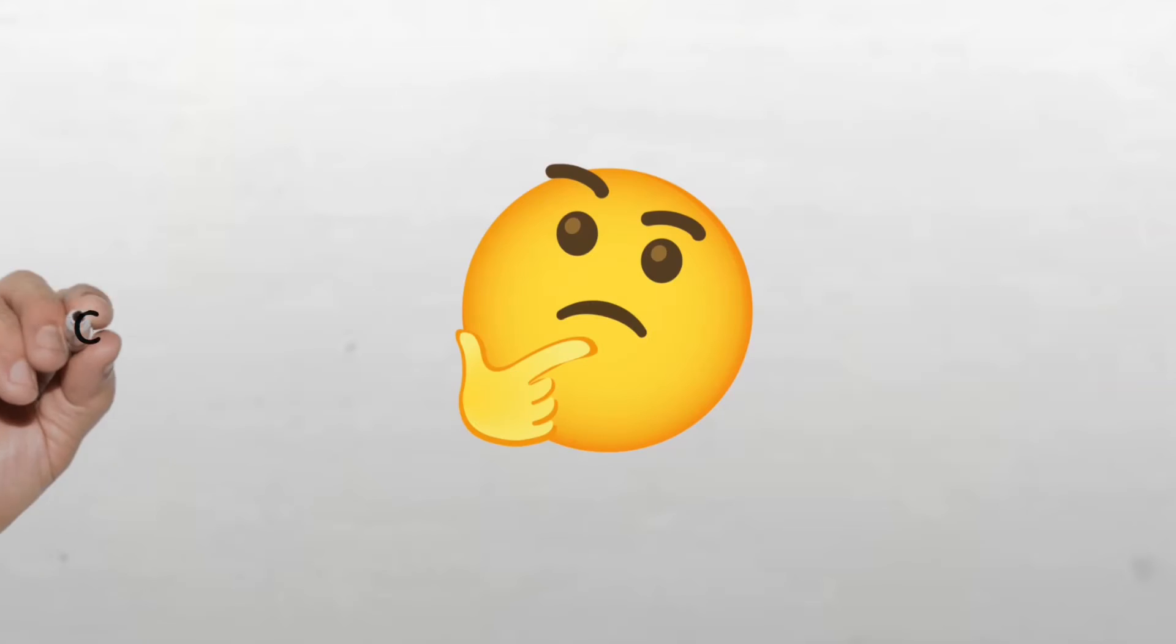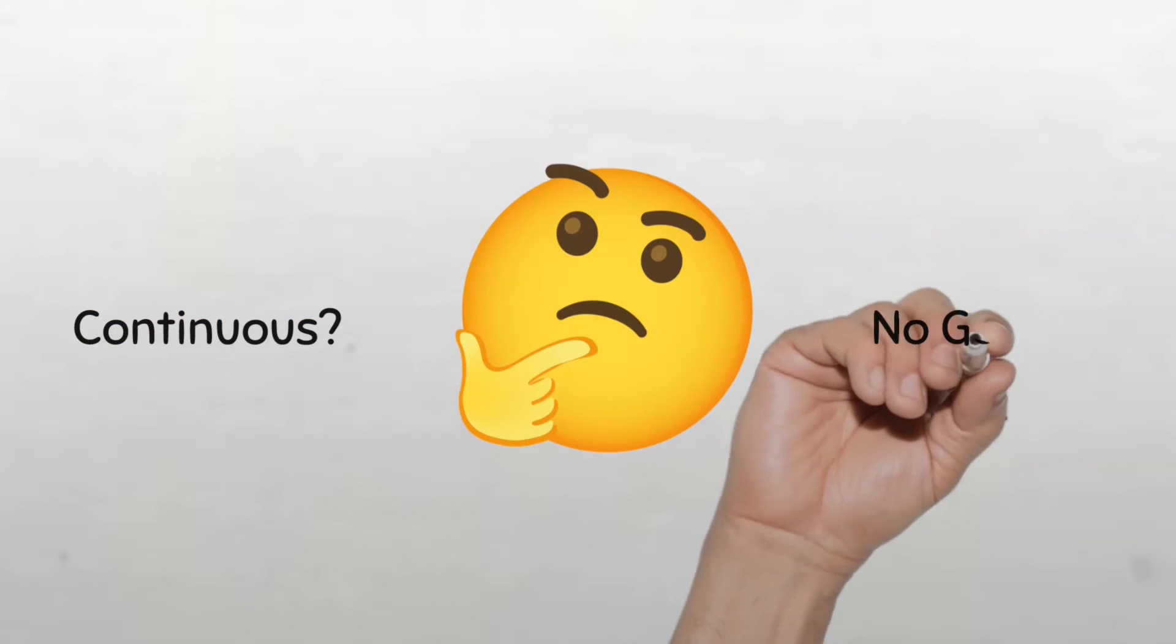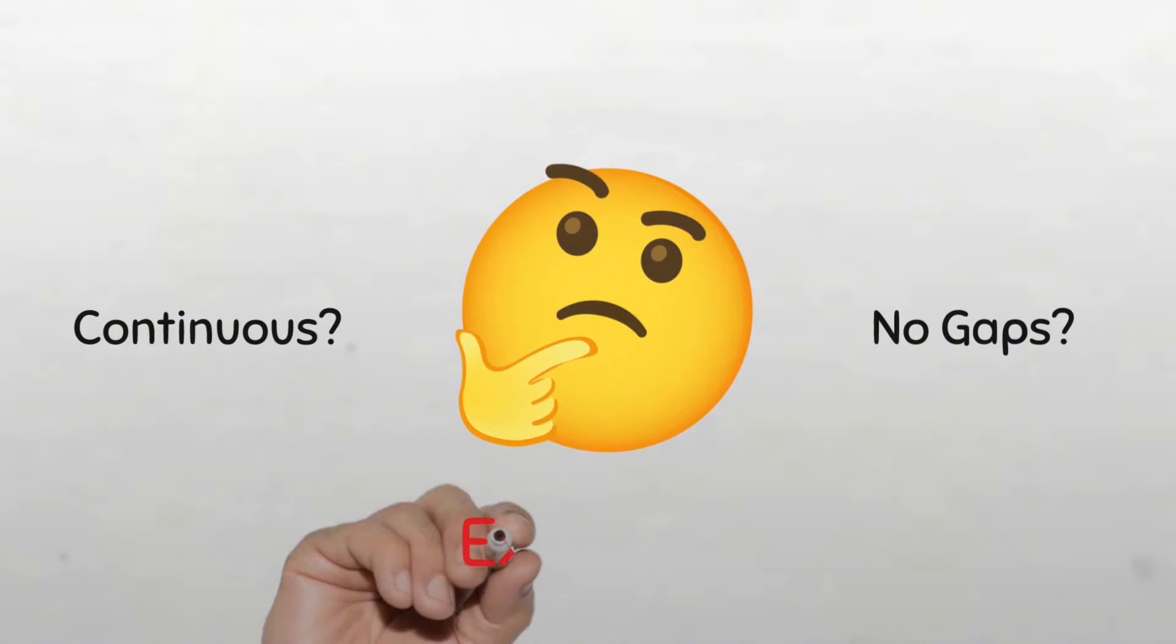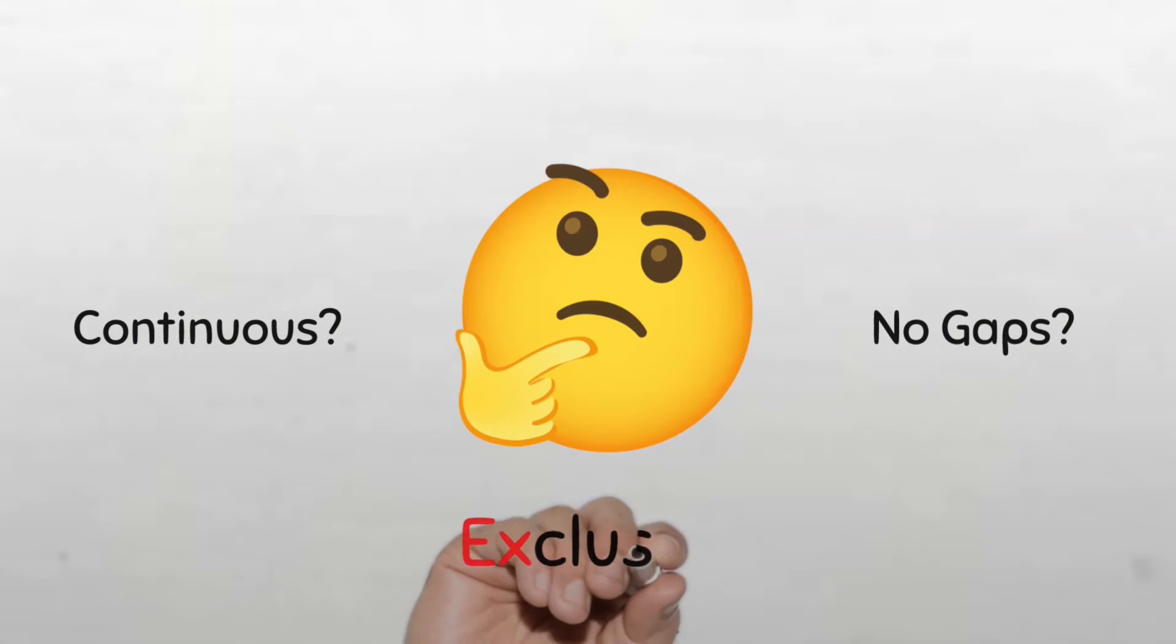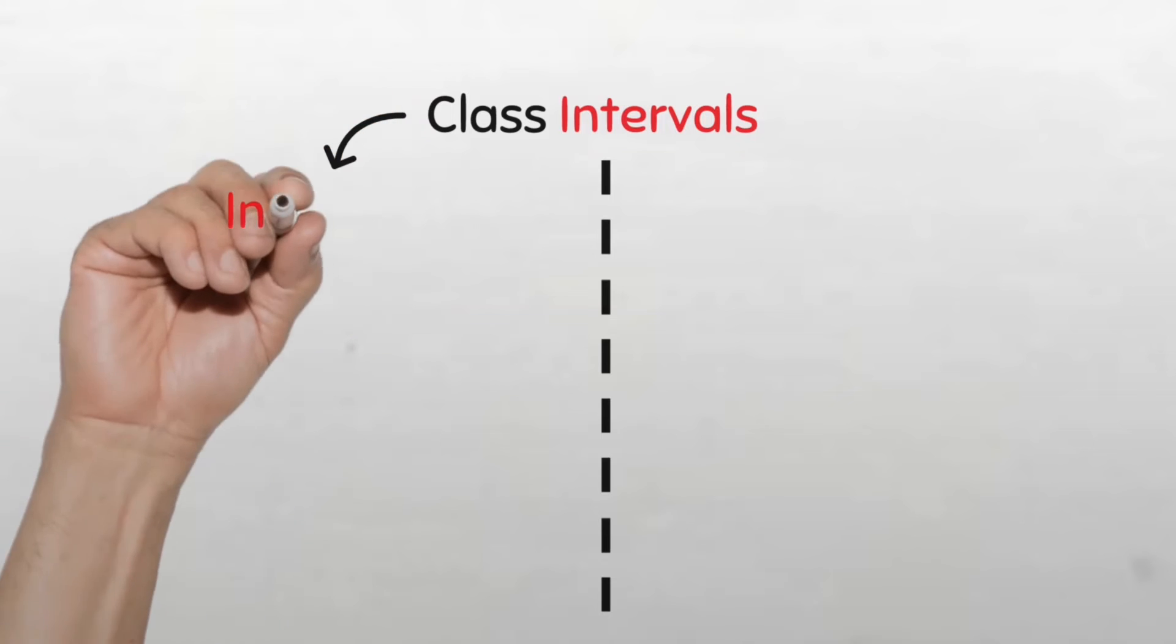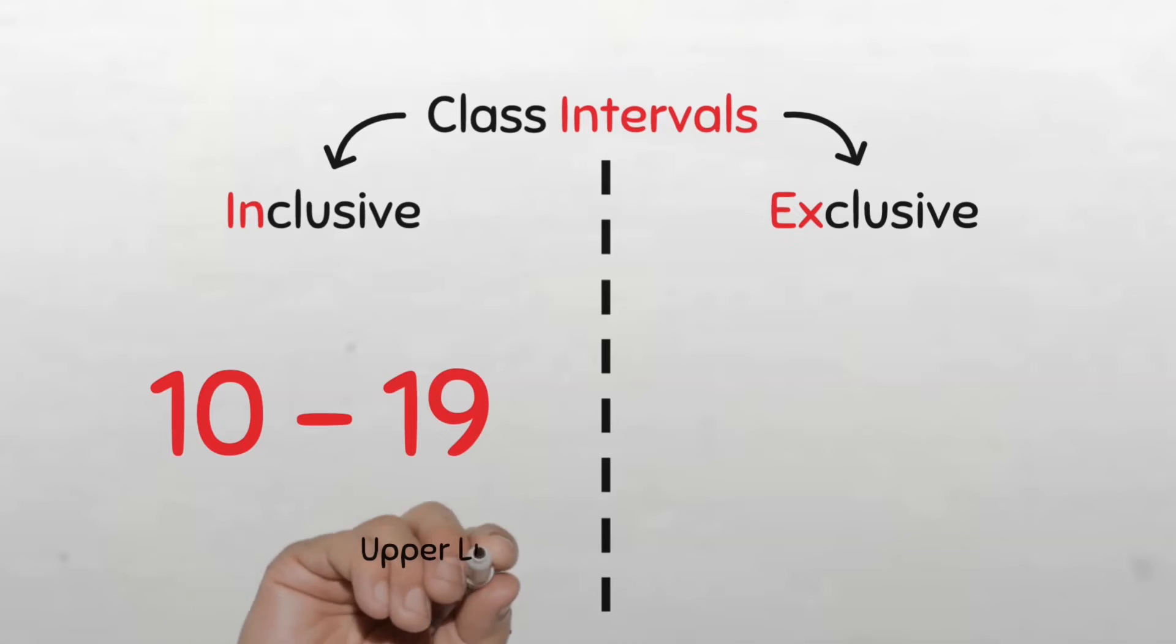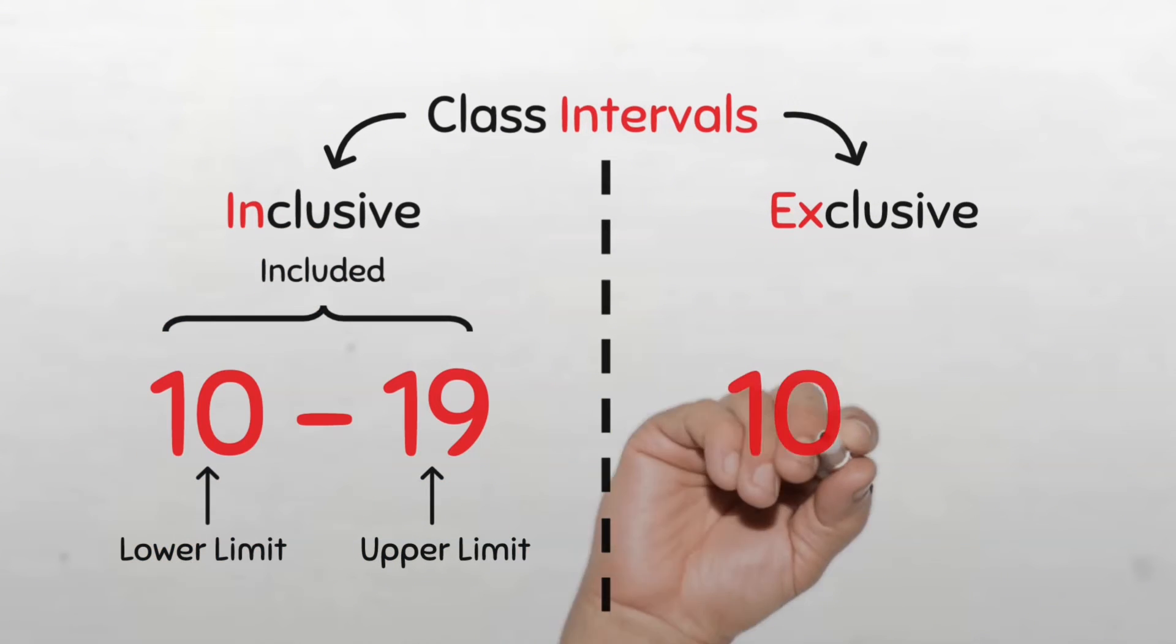So the inclusive type of classification may not work well when our data has decimal points and values fall within the gaps. It may only be used for a group frequency distribution for discrete variables where the variable takes on only whole numbers. So what do we do in a situation where the variable we are grouping is continuous? And we know when we're making classes, these classes must be without any gaps.